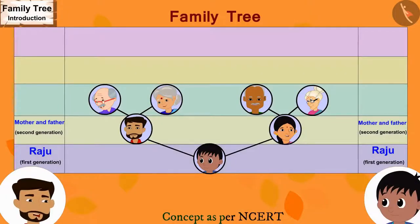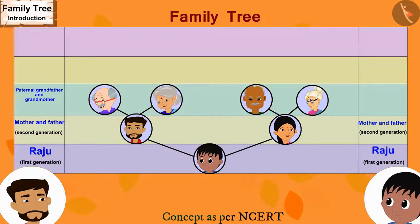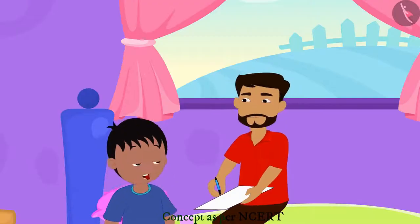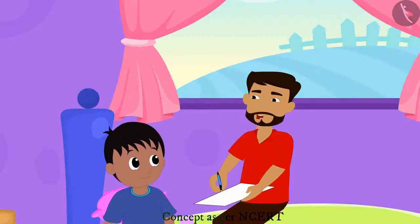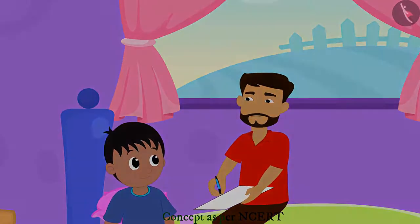That's correct, Raju! Saying this, Raju's father wrote the names of Raju's paternal grandfather and grandmother and maternal grandfather and grandmother. Now our family tree is complete, isn't it, father? No, Raju, we have yet to add more people to it.